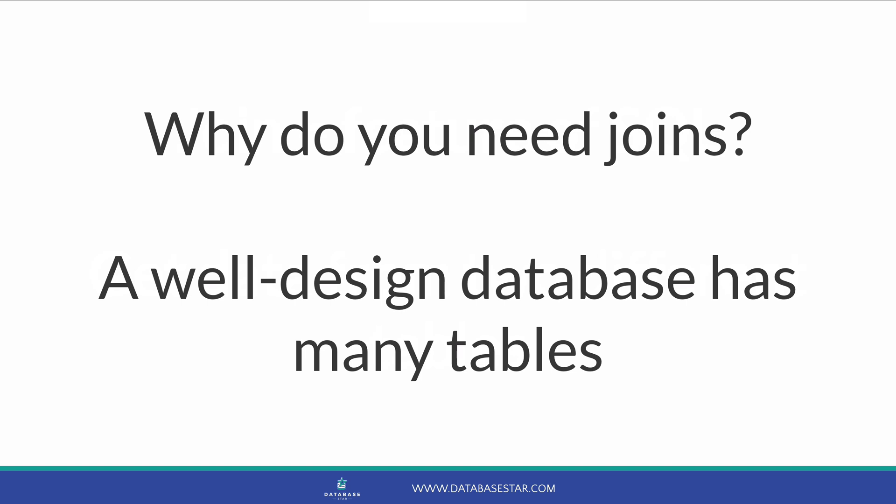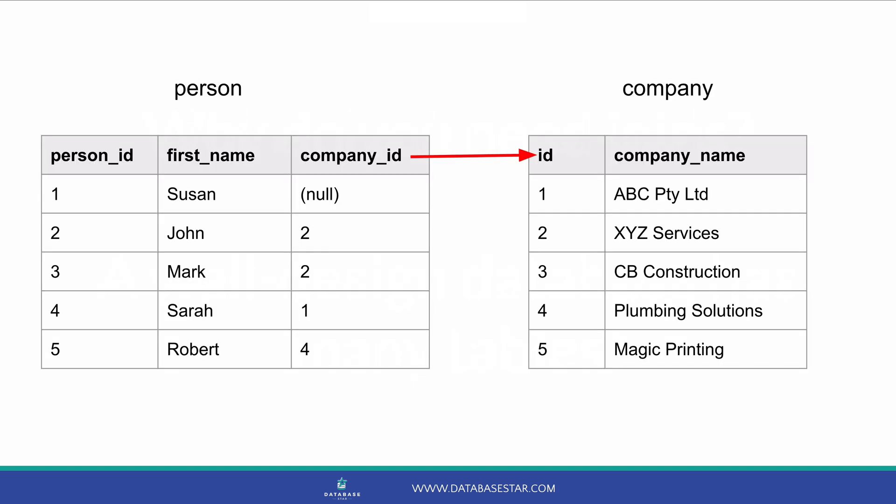Let's take a look at some examples of joins. Here are two sample tables we'll use. One table contains person information — a person ID, which is their unique identifier, a first name, and a company ID. The other table is the company table, which contains an ID and the company name. The company ID in the person table represents the company ID in the company table. This means that John, who has a company ID of 2, is related to the company XYZ Services, because that company has a company ID of 2.